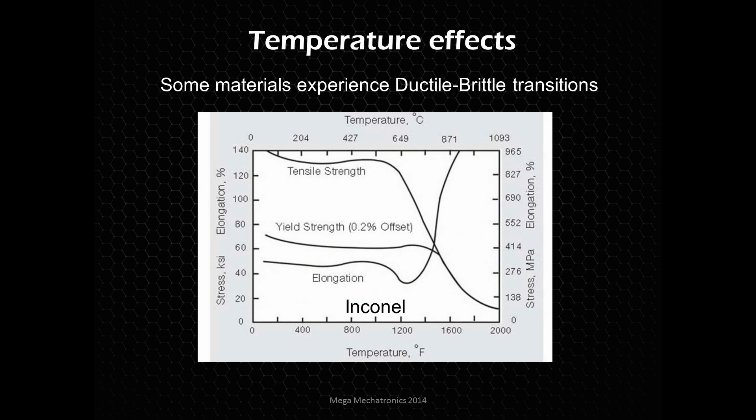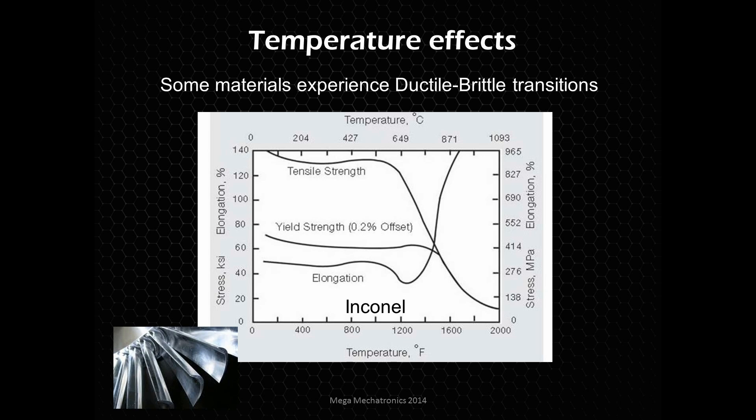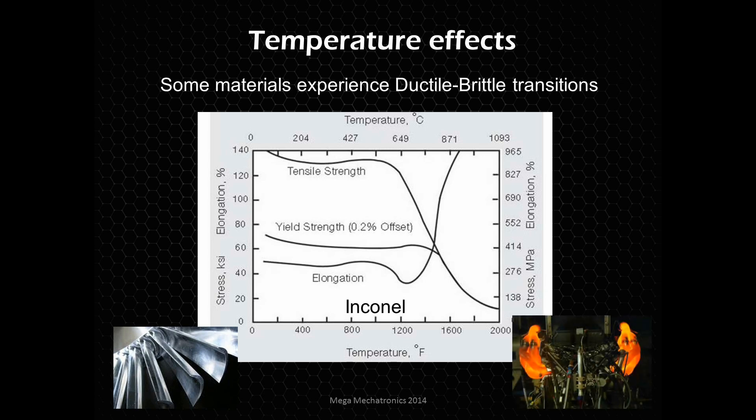We can also look at this exotic material — it doesn't start losing mechanical properties until around 1,000 to 1,100 degrees Fahrenheit, about 500 degrees Celsius. That's a huge range, and that's why they use it in jet engines, F1 exhausts. I've even designed some heat treat fixtures to heat treat valve springs using this material exclusively.